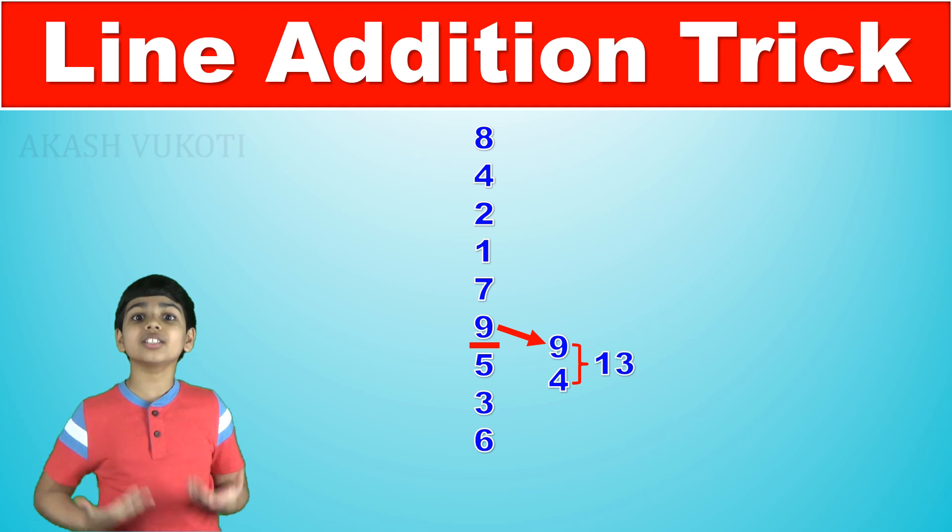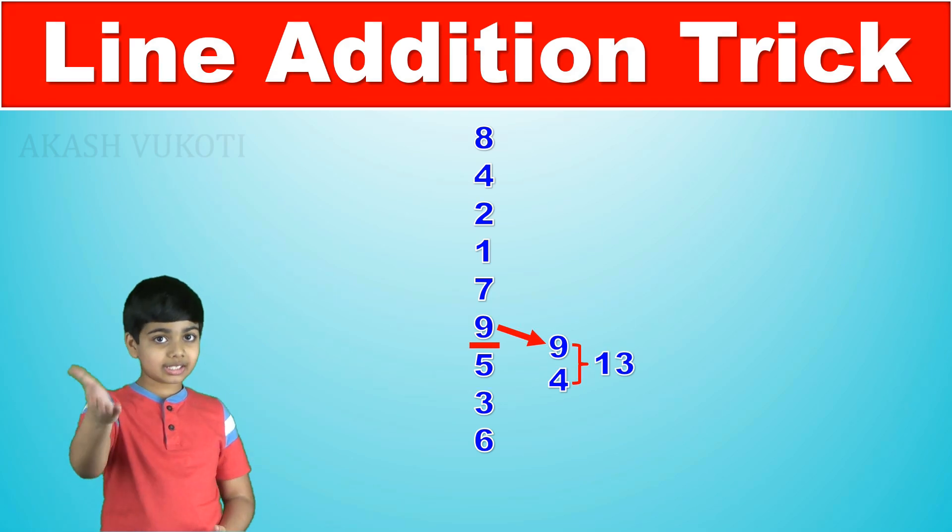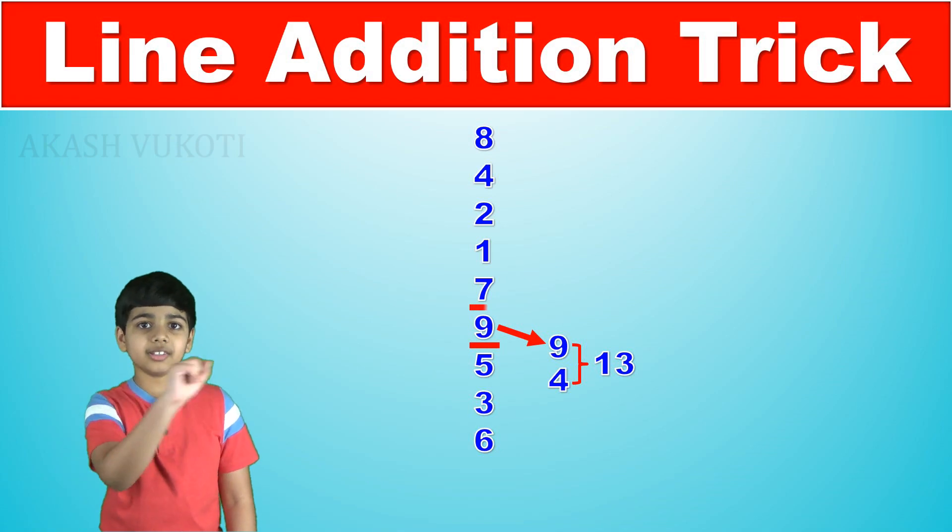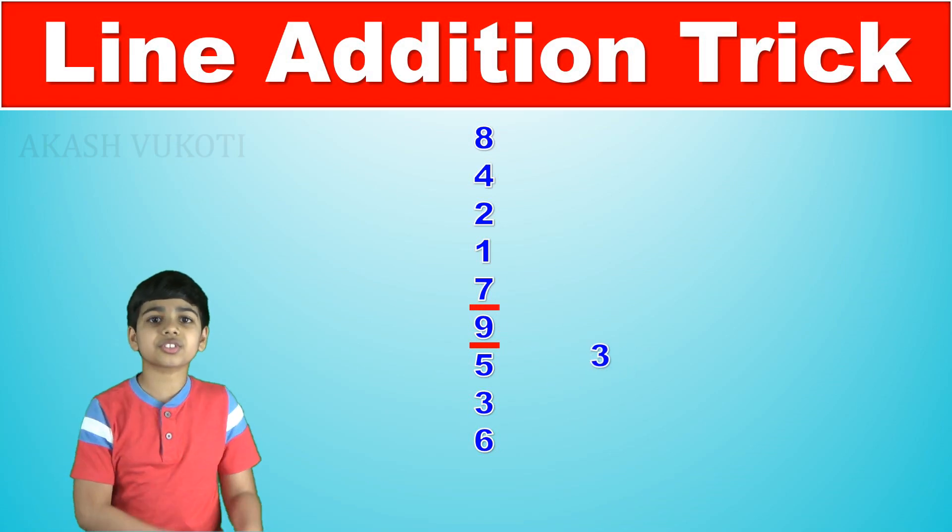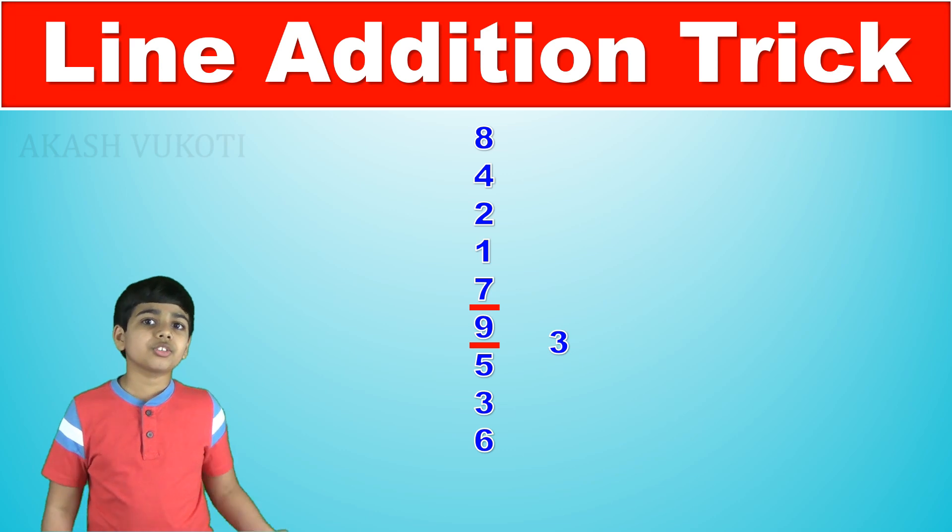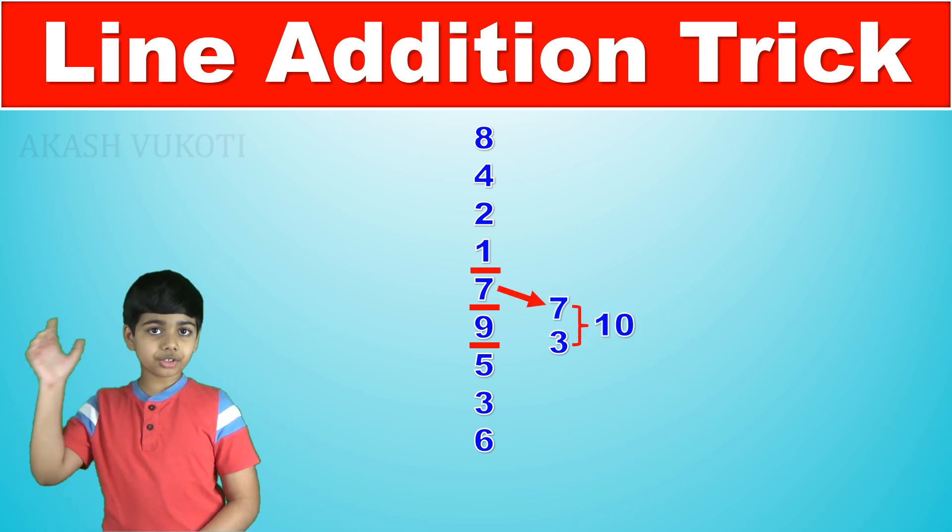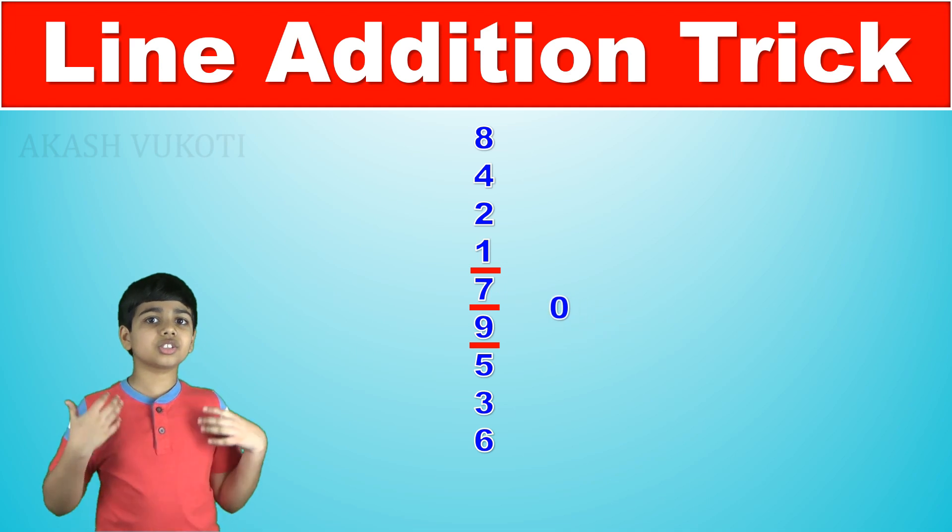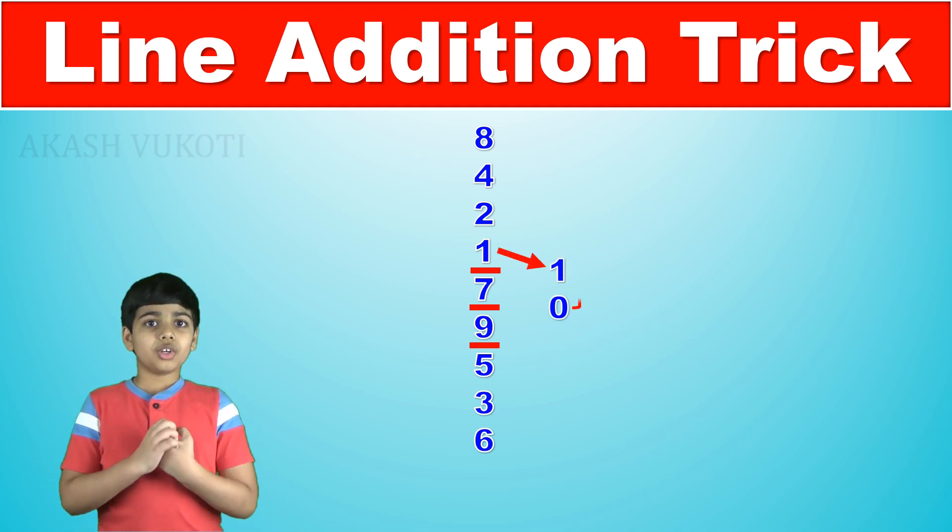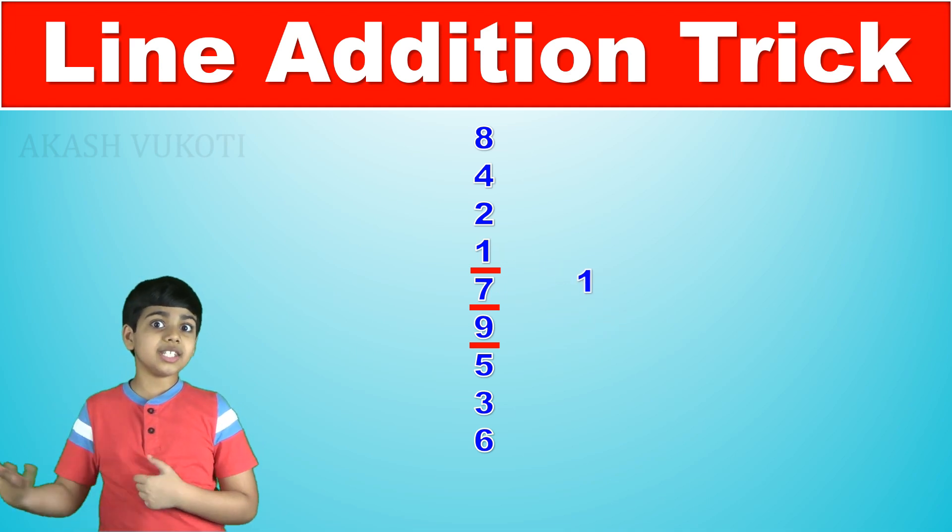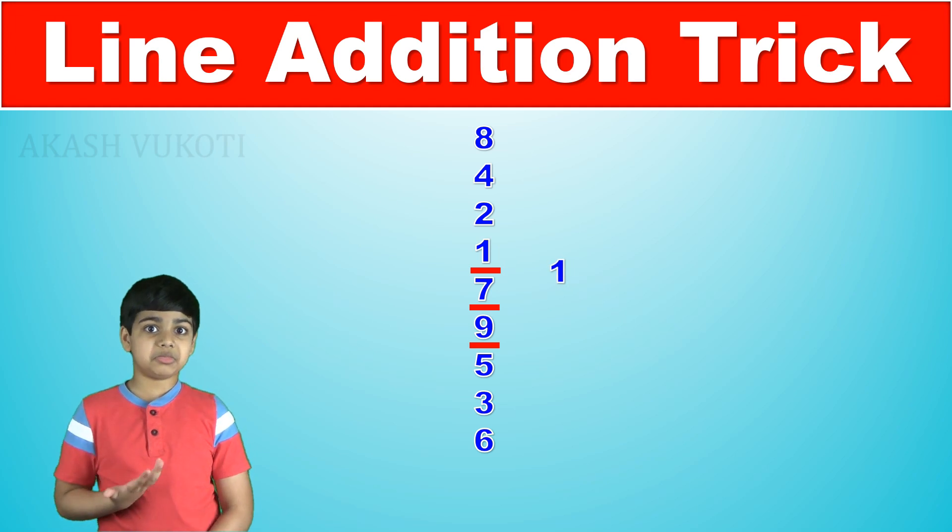4 plus 9 is 13 and it is greater than 10 so we draw a line and subtract 10 from 13 getting 3. Next, 3 plus 7 is 10 so we write another line and since we are left with 0 we can start with the next one immediately without having to add with 0.